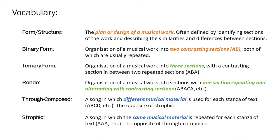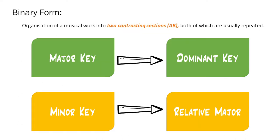First up, binary. Binary form is the organization of a musical work into two contrasting sections, A and B, both of which are usually repeated.